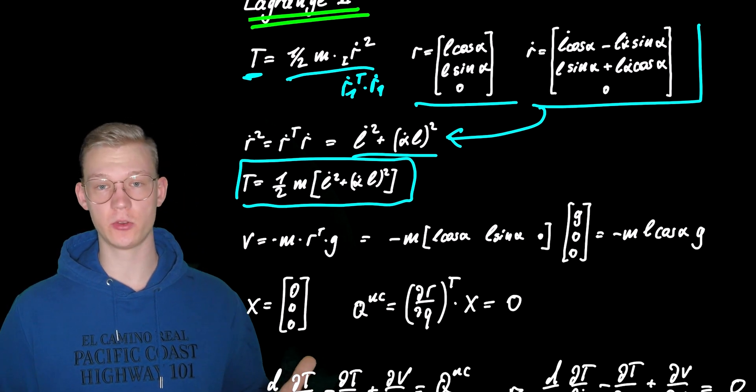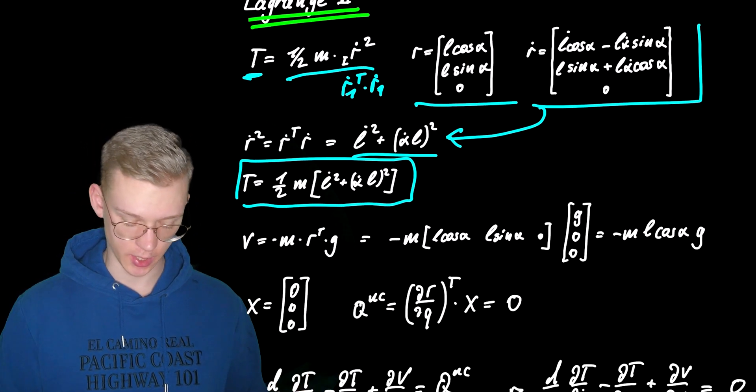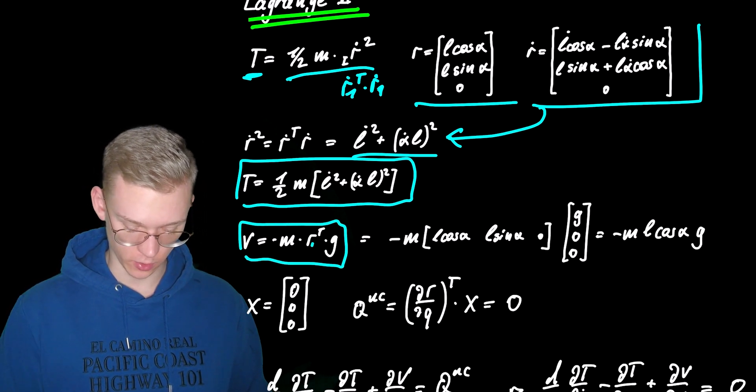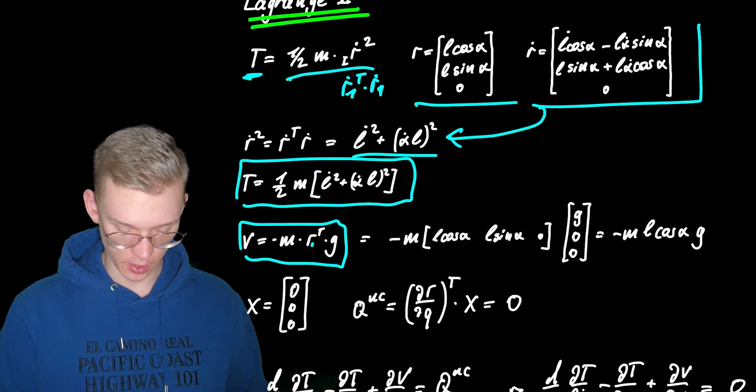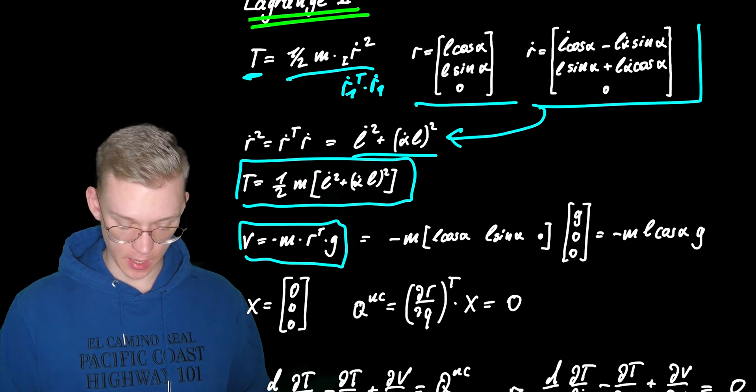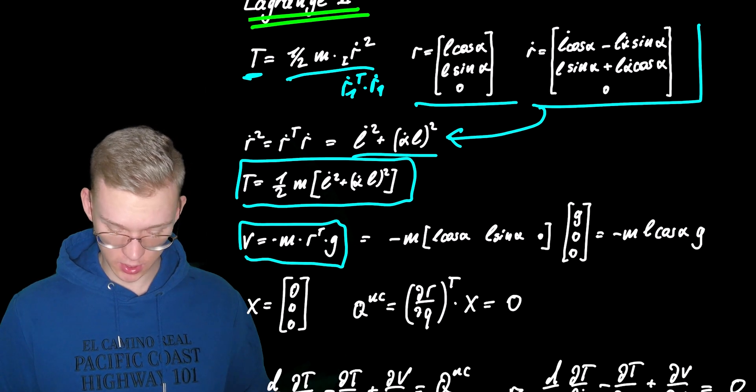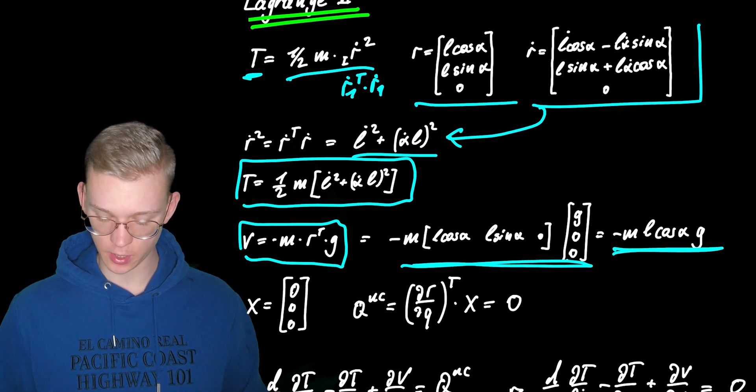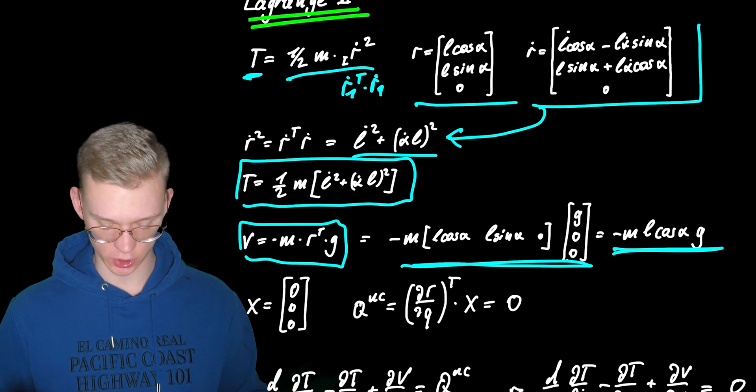As soon as we have the kinetic energy we have to get the potential energy. The potential energy is minus m times r1 in this case but we only have one so it's r. R transpose times g. So we have this expression and this is our potential.